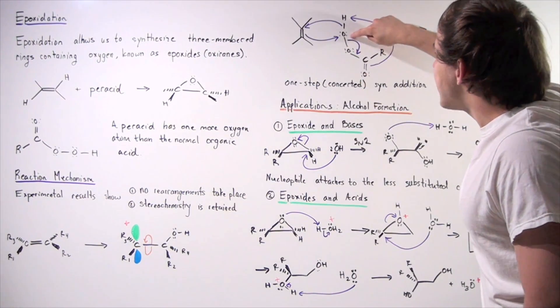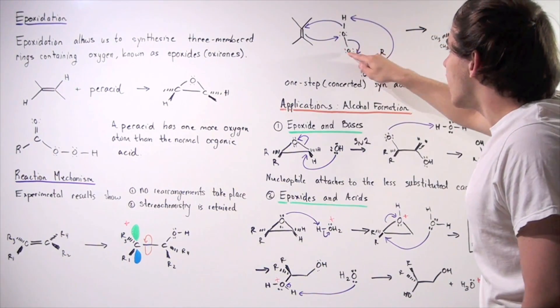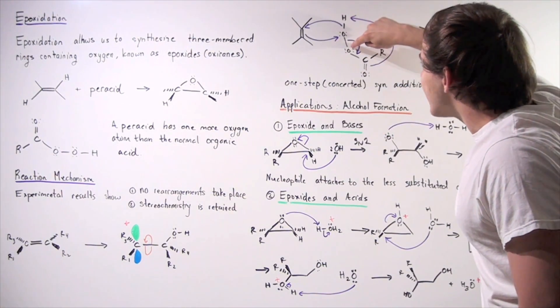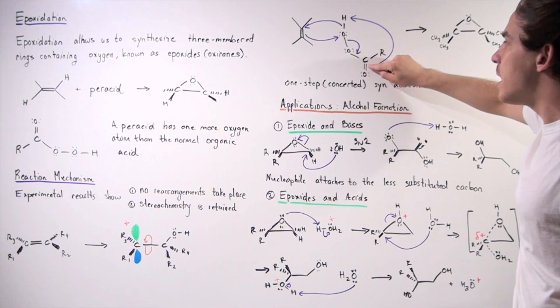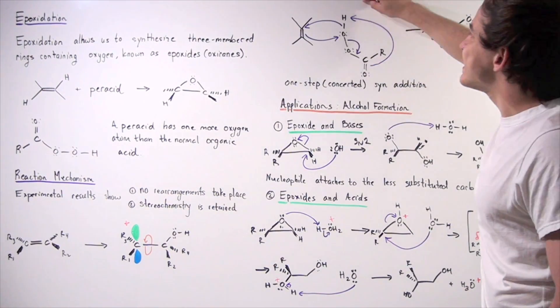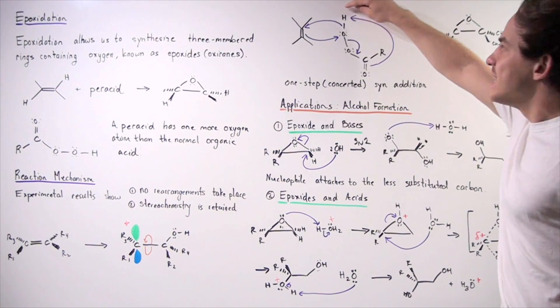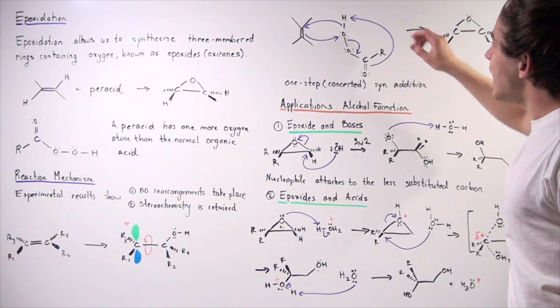At the same time, this bond attacks this carbon, forms a double bond between this oxygen and carbon. And at the same time, this double bond, this pi bond, breaks and it attacks this H atom, taking it away.